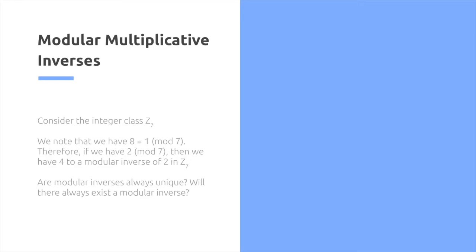Are modular inverses always unique? Will there always exist a modular multiplicative inverse? Some facts. Modular inverses are not unique. We can consider 2 times 11 is equal to 22, which is congruent to 1 mod 7. Therefore, we show there exists greater than or equal to 2 solutions.